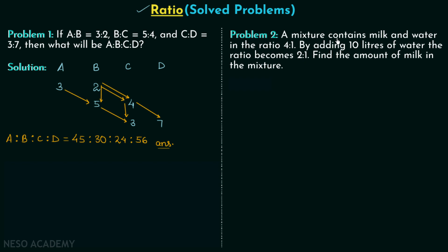In problem number two, there is a mixture of milk and water with a ratio of 4:1. By adding 10 liters of water to the mixture, the ratio becomes 2:1. We are required to find the amount of milk in the mixture. This is one classic problem on ratios.